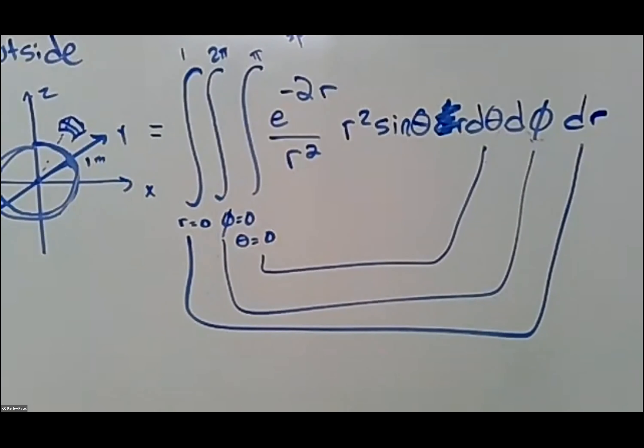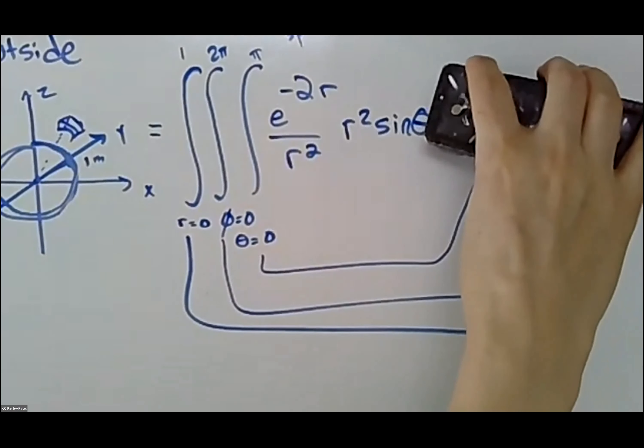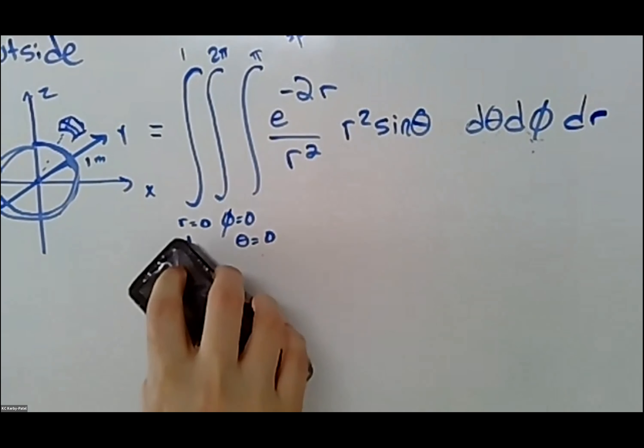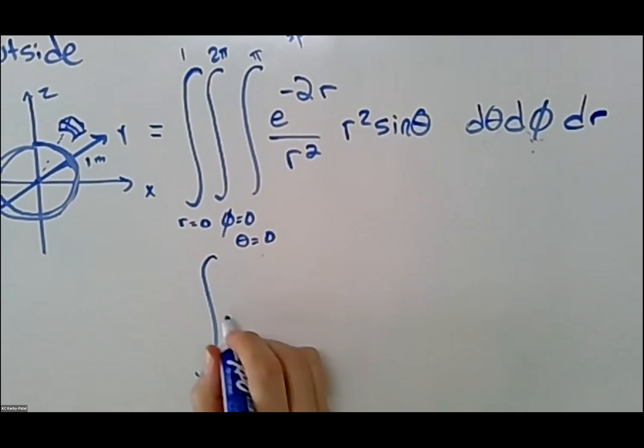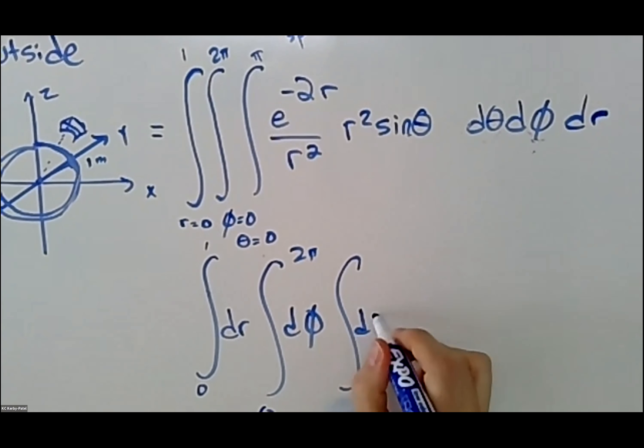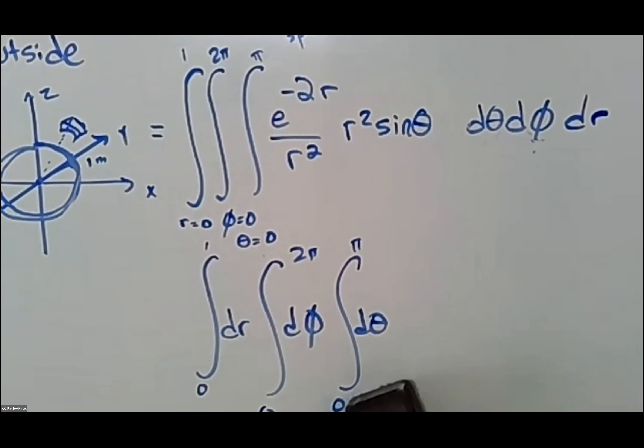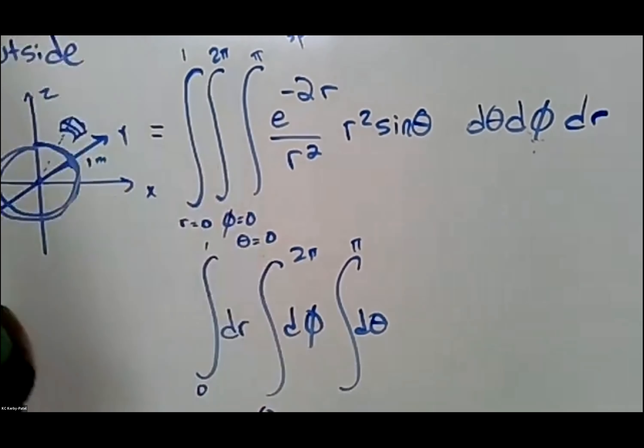There are several different ways to write down your integrals. I have also seen it where people will write—I'll write this one the next way—they'll write integral dr from zero to one, integral dφ from zero to 2π, integral dθ from zero to π, and then everything that goes after it right there, which is also a completely reasonable way to write this and it helps disambiguate which bounds apply to what. Just so you know, more than one way to write an integral.